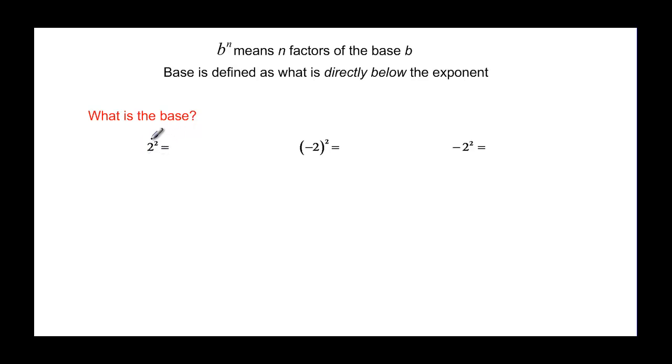So if I look at this problem of 2 squared, the base is just the 2, that's pretty obvious. When I look at this one, my base is negative 2 because the parenthesis is directly below that exponent. So everything inside that parenthesis is my base. And then finally this one, the 2 is the only thing that is directly below my exponent, so the base is 2. This really means the opposite of 2, or the opposite of 2 squared.